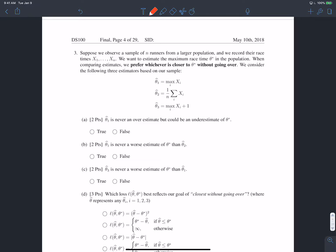In question three, we were told that we observe some sample of n marathon runners from a larger population, and we record their race times x1 through xn. And we want to estimate the maximum race time theta star in the population. So theta star is essentially the amount of time that the slowest person took to run the race.